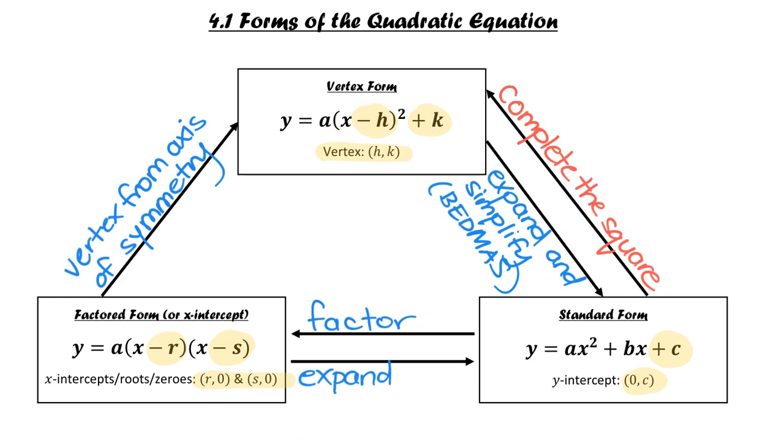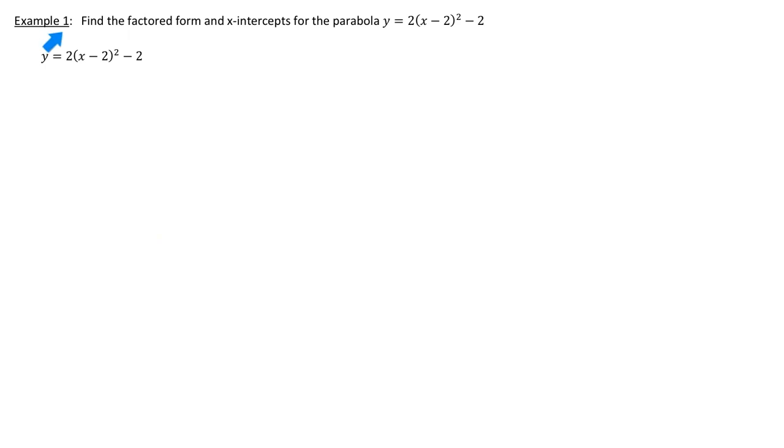Let's look at two examples of how to use this triangle to convert between the different forms of the quadratic equation. Example one: Find the factored form and x-intercepts for the parabola y = 2(x - 2)² - 2. We should first notice that this is in vertex form. And if we're trying to find the factored form, we are going to be given the x-intercepts directly. To go from vertex form into factored form, we actually have to expand it into standard and then factor it. It starts with simply BEDMAS. Follow clearly the BEDMAS steps.